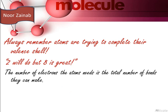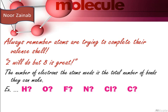The number of electrons an atom needs equals the total number of bonds it can make. For example, hydrogen needs one electron to complete its duplet — it already has one electron in its valence shell, so the maximum number of bonds hydrogen can make is one. Oxygen needs two electrons to complete its octet, so the maximum number of bonds oxygen can make is two — it can make a double covalent bond.